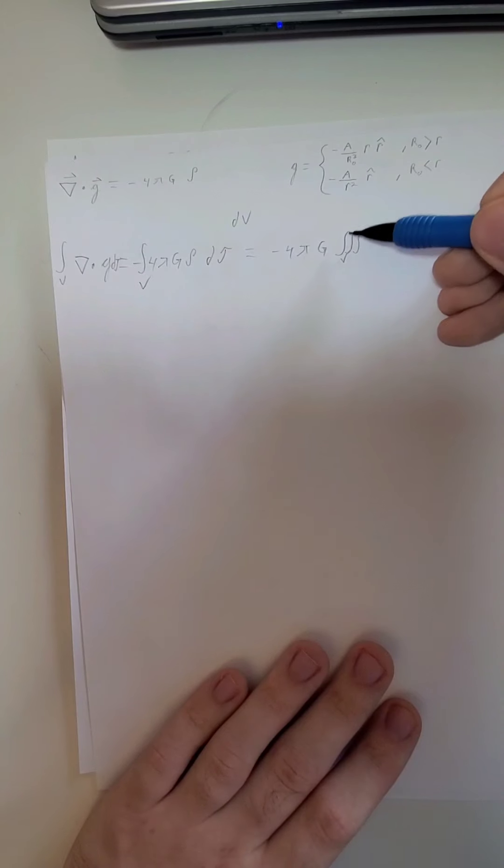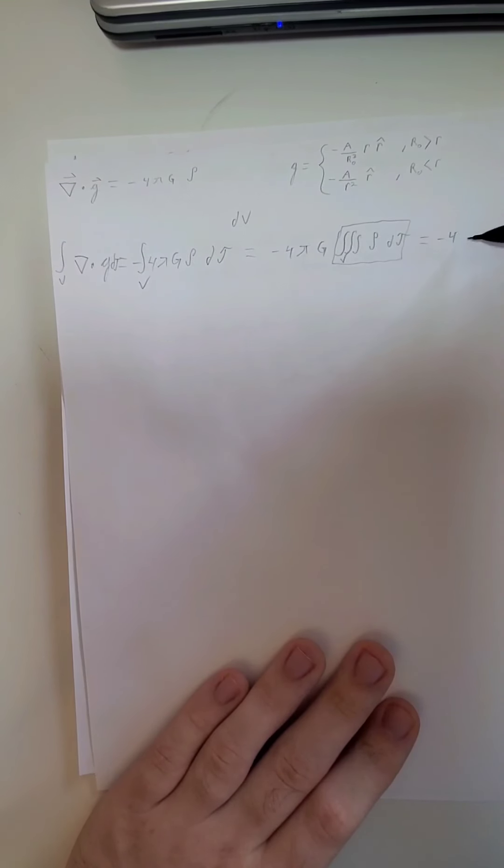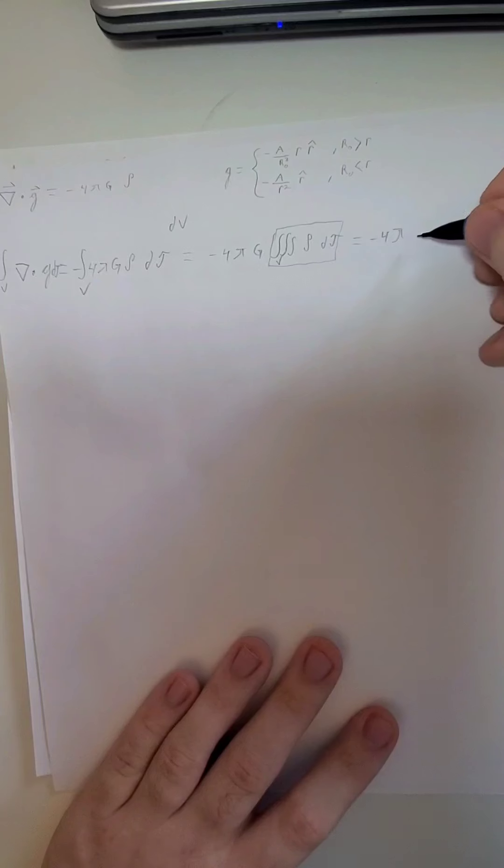We are integrating over a sphere. It would be zero to r-naught as our final values. You would have theta and phi somewhere in there. 0 to π for phi, and 0 to 2π for theta. And this whole thing is simply equal to the mass enclosed. So make sure you keep in mind that m_in is mass enclosed and not a minimum.